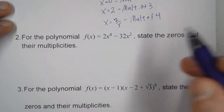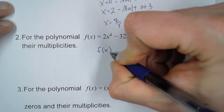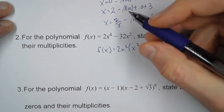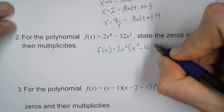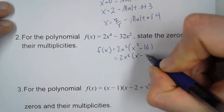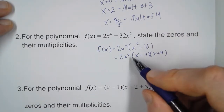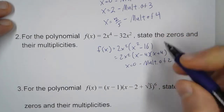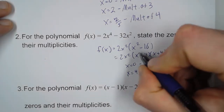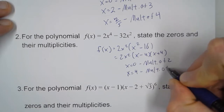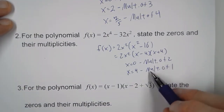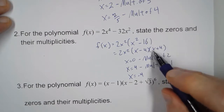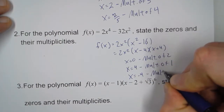Let's look at number two. Now this one we have to factor. So f of x equals — we can take out two x squared. And when we do, we're left with x squared minus 16. And that can factor into two x squared, times x minus four, times x plus four. So x equals zero has a multiplicity of two. x equals four has a multiplicity of one. And x plus four — that only shows up once, so that also has a multiplicity of one. Note: some books or teachers won't require you to give multiplicity unless it's more than one.